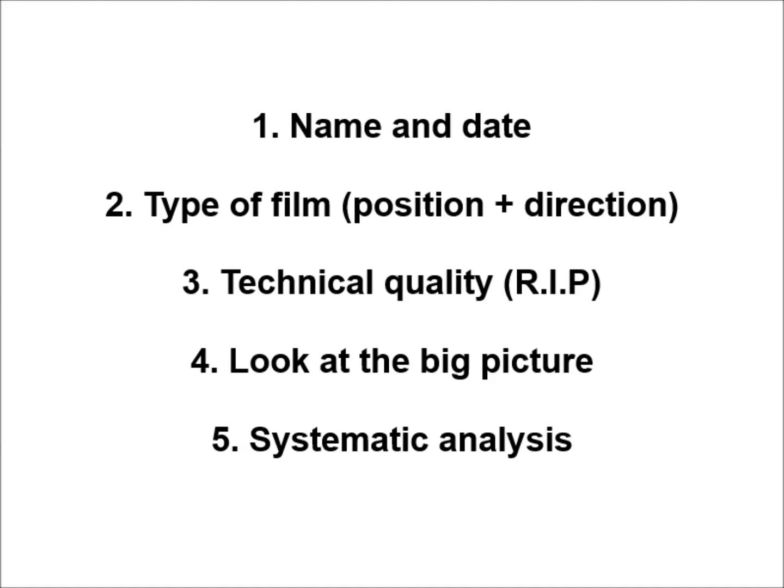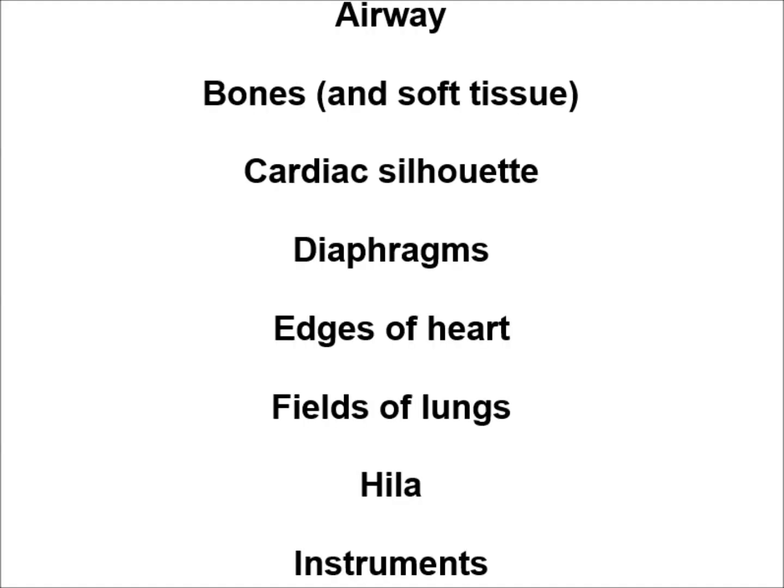4. Look at the big picture and take note of any obvious abnormalities. 5. A systematic analysis using the A, B, C, D, E, F, G, H, I approach. 6: A — check the airway is central and patent; B — check the bones for fractures or lesions and also check the soft tissues around; C — check that the cardiac silhouette is not abnormally enlarged; D — check the diaphragms are visible, dome-shaped and that the angles are intact; E — check that the edges of the heart are clear; F — check the lung fields for normal lung markings and abnormal shadowing; H — check the hyla for lymph nodes or masses; and I — look for instruments.